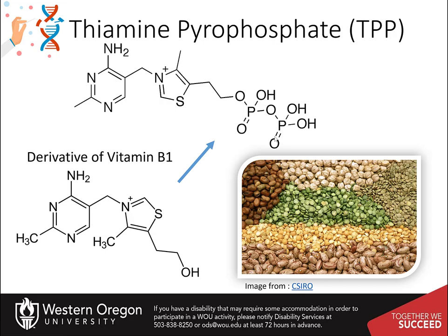Thiamine pyrophosphate is derived from vitamin B1. Good dietary sources of thiamine, or vitamin B1, include legumes, nuts, oats, eggs, milk, and liver. Other food sources are often fortified with vitamin B1, such as rice, pasta, breads, cereal, and flour.